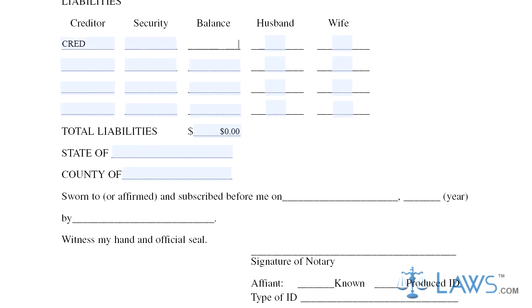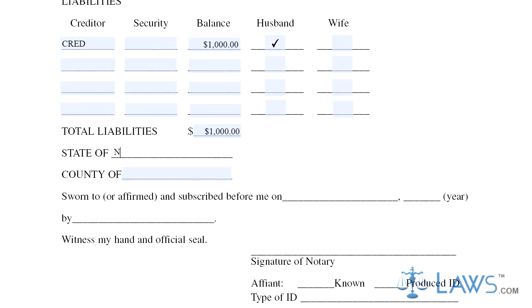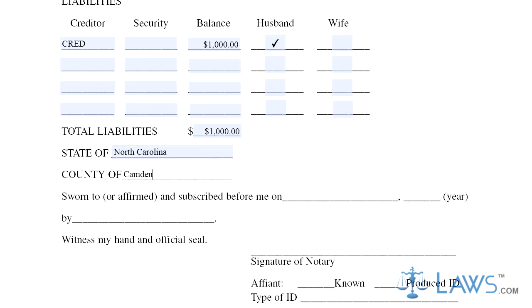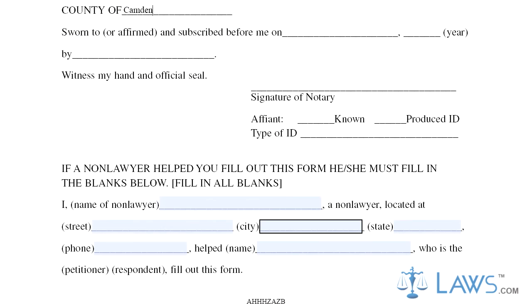Step 7: Sign and date the form in the presence of a notary public. Step 8: If you are assisted by a non-lawyer with this form, they must enter the information requested about them at the bottom of the fourth page.